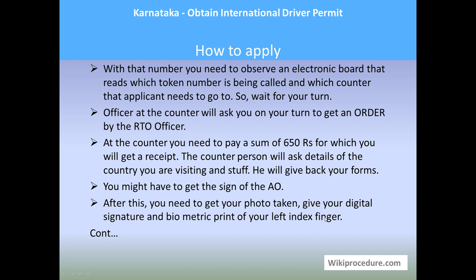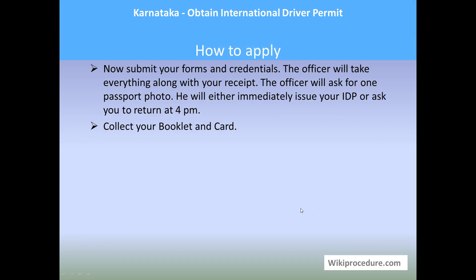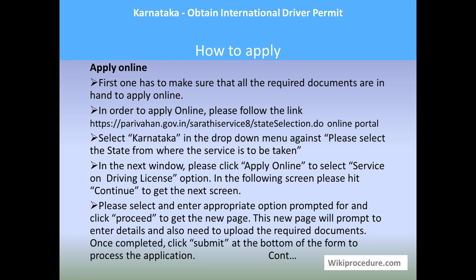You may need to get the signature of the ARO — go to the ARO desk and get the sign on the form. After this, you need to have your photo taken, give your digital signature, and provide a biometric print of your left index finger to complete the procedure. Submit all forms and credentials; the officer will take everything along with your receipt and either immediately issue the IDP or ask you to return after 4 p.m. to collect the booklet or card.